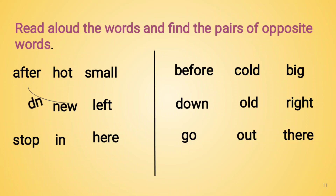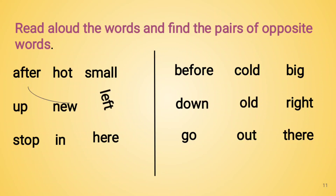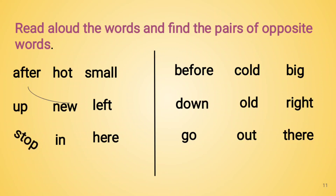The next word is up — the opposite word for up is down. The next is new — the opposite word for new is old. Next is left — the opposite word for left is right. Stop — the opposite word for stop is go. The next is in — the opposite word for in is out. The next is here — the opposite word for here is there.